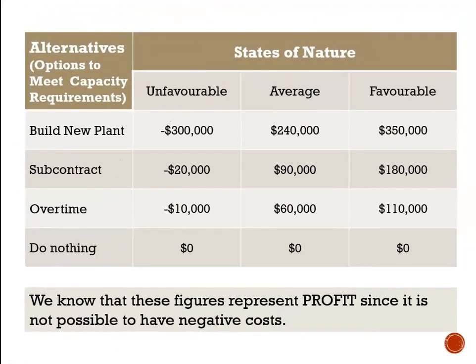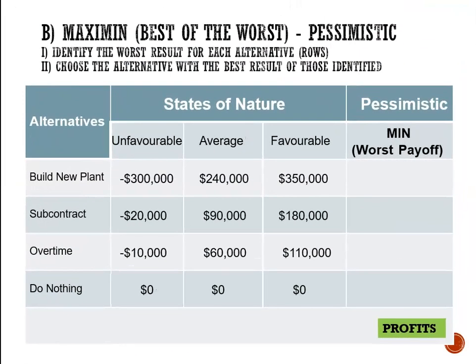Now we have another payoff table where the figures represent profit — we know they're profit because costs and revenues cannot be negative. We want to choose the best option to meet capacity requirements. The choices are to build a new plant, to subcontract, to do overtime, or to do nothing. For building a new plant, the options are a loss of 300,000, a profit of 240,000, and a profit of 350,000. The worst outcome would be the loss of 300,000 — the lowest profit.